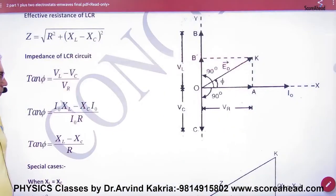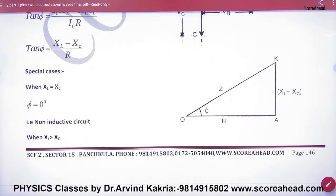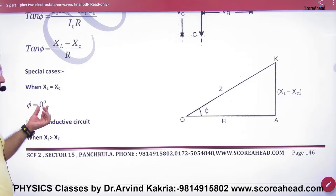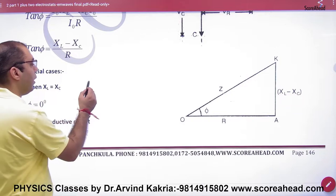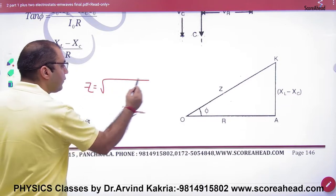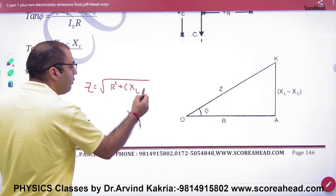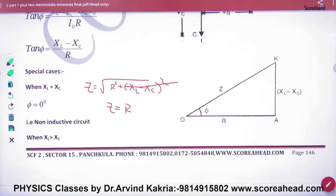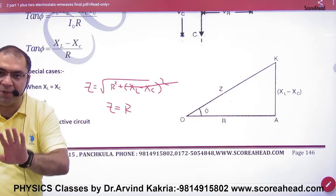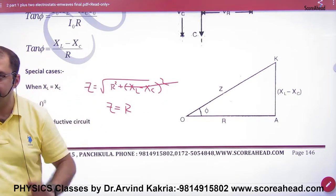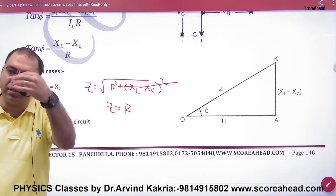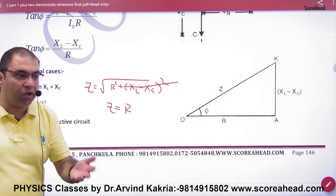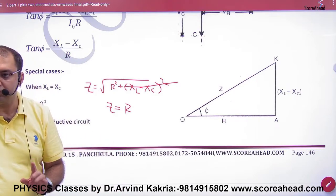Next, special case: if XL equals XC, then what will be φ? φ will be zero. This means the impedance Z = √(R² + (XL − XC)²), and if XL equals XC they cancel, so Z equals R. In this whole combination, only R does its work — XL and XC cancel — so the circuit behaves like pure resistance, and current and voltage are in the same phase. φ is automatically zero.